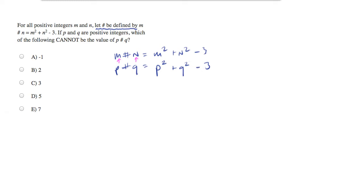Now there is a hidden constraint in this problem. So they've asked us, which of the following cannot be the value of p hash q.